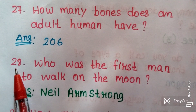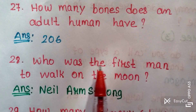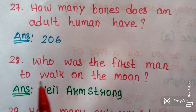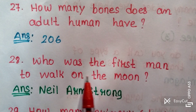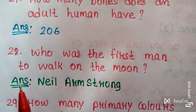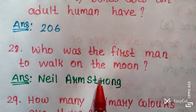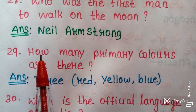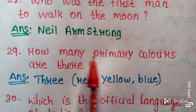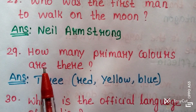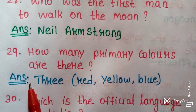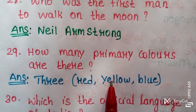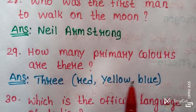Question twenty-eight: Who was the first man to walk on the moon? Answer: Neil Armstrong. Question twenty-nine: How many primary colors are there? Answer: 3 — red, yellow, and blue.